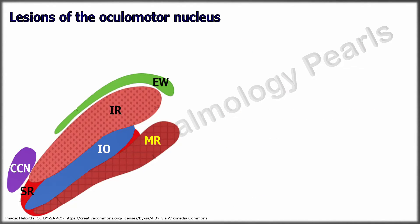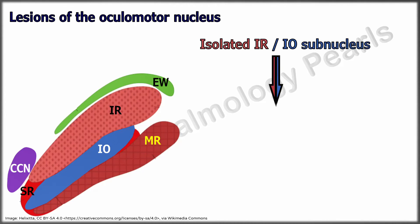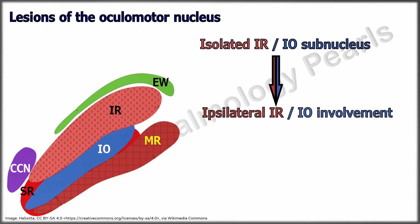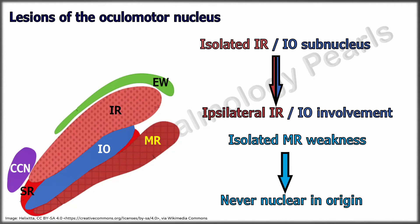Isolated involvement of the inferior rectus or inferior oblique subnuclei can cause weakness of the respective ipsilateral muscles. However, because of the multiple locations of the medial rectus motor neurons within the subnucleus, isolated unilateral or bilateral medial rectus weakness is almost never of nuclear origin.